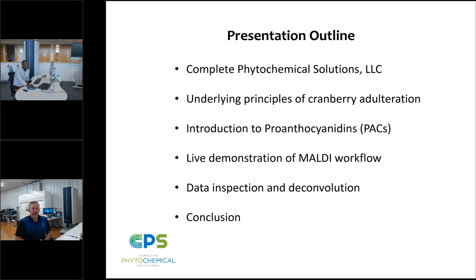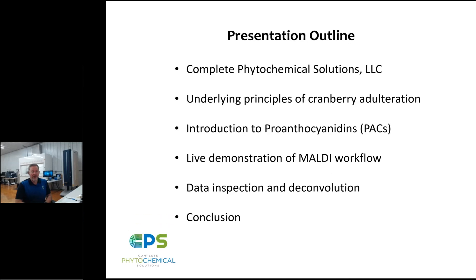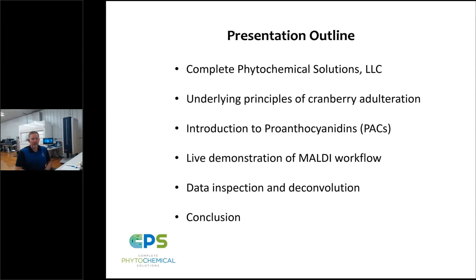We'll talk about the underlying principles of adulteration exemplified by cranberry products. I'll introduce you to a class of compounds referred to as proanthocyanidins, or PACs — a bioactive class of oligomeric polyphenols found in cranberries with unique characteristics that can be used to support product authenticity. We'll perform a live MALDI workflow demonstration, inspect the data, and interpret it in relation to authenticity, then conclude.